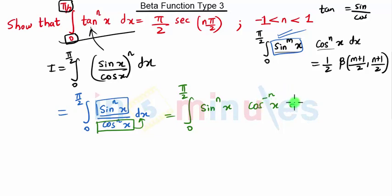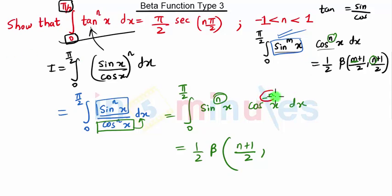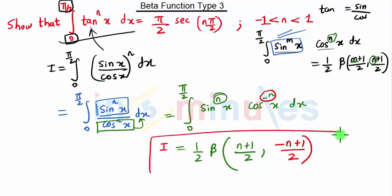Now comparing with the standard formula, these two equations are similar. The result is (1/2) · β((n+1)/2, (−n+1)/2), where m corresponds to n (the power of sine) and the power of cosine is −n. So the final answer is (1/2) · β((n+1)/2, (1−n)/2).